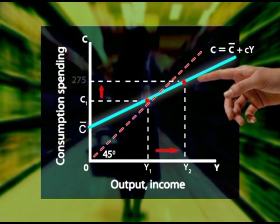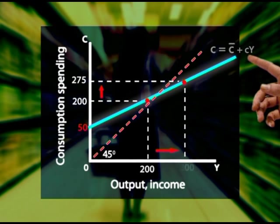The slope or angle of the curve is determined by the marginal propensity to consume. It's equal to the change in C divided by a change in Y.